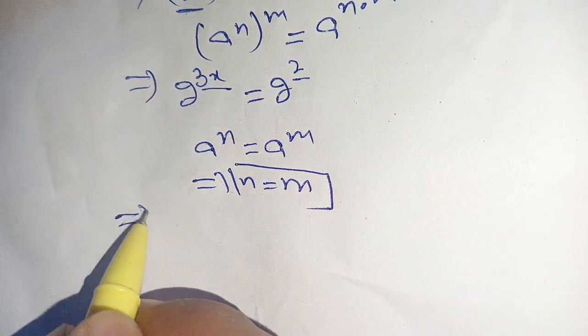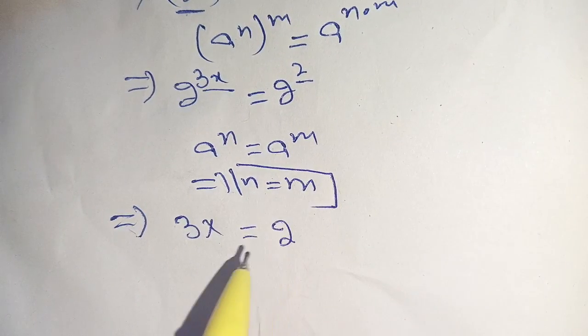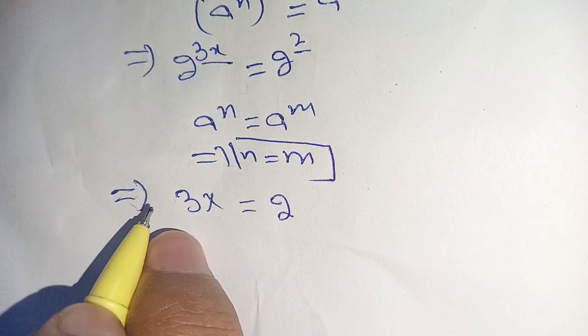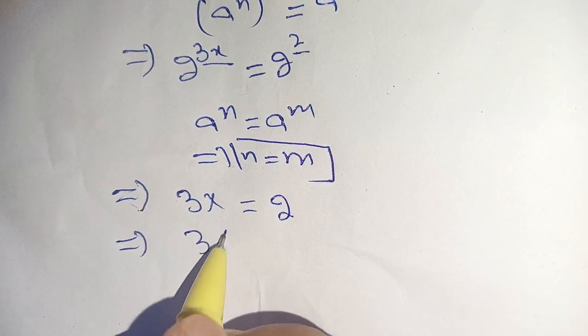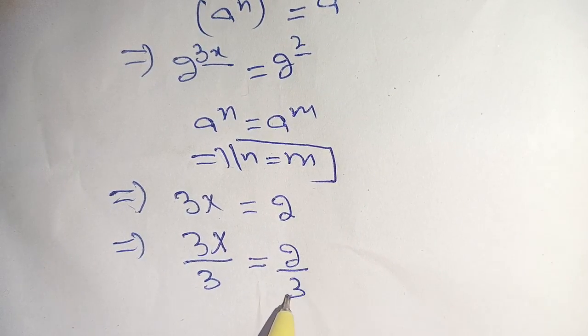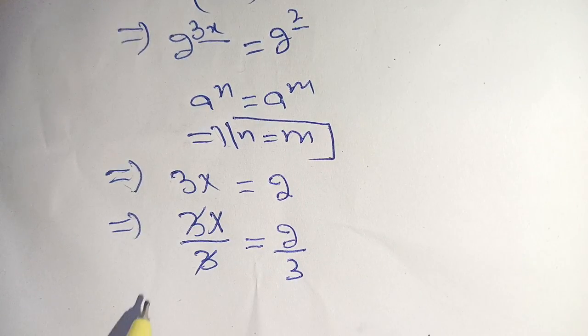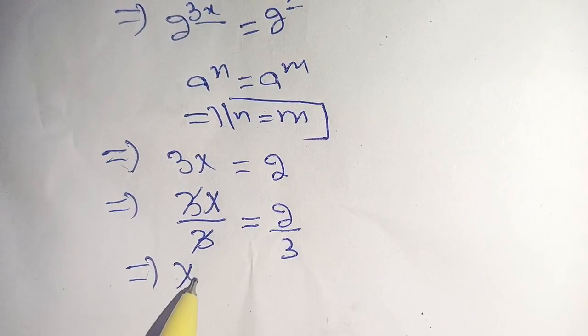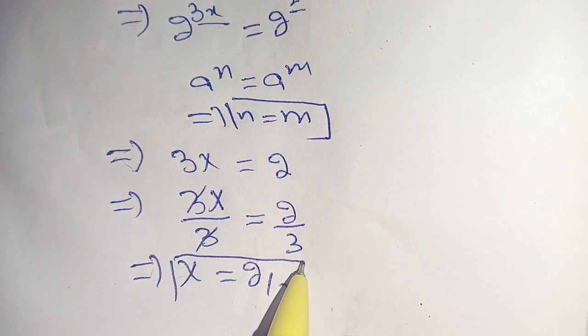Now in the next step, dividing both sides by 3, we get 3x divided by 3 equals 2 divided by 3. Now this 3 and this 3 can be cancelled out, which implies x equals 2 divided by 3.